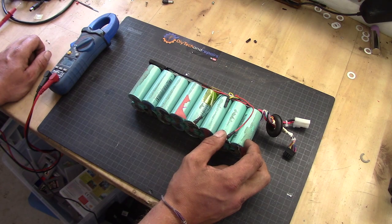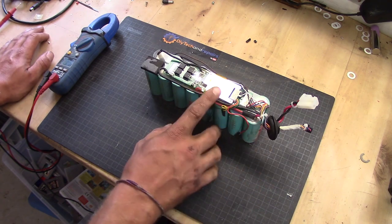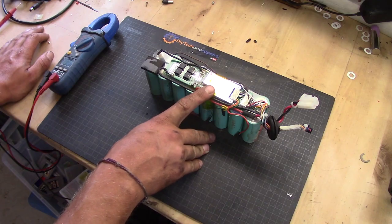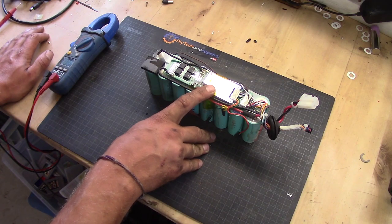That means that their nominal voltage is 3.2 volt. The thing is with the BMS is that this is a balancing and a protection system as I have been talking about before.